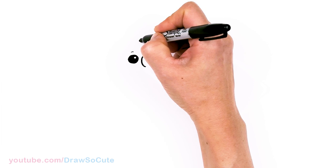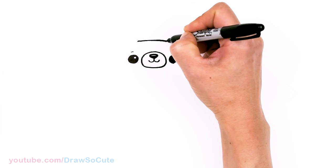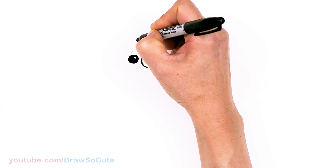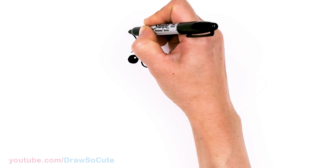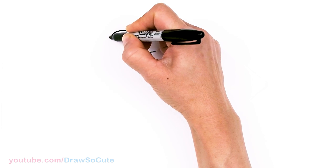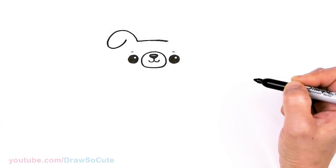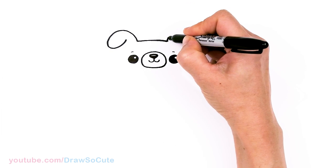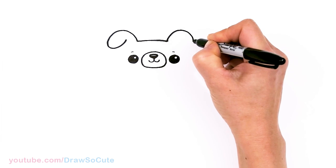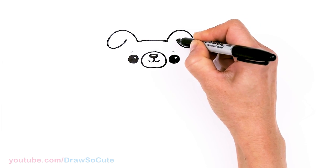And then I'm gonna come right here and I'm gonna start to draw the ears. So I'm gonna go up, draw these floppy ears, come down and in. Same thing over here. Up, down and in.